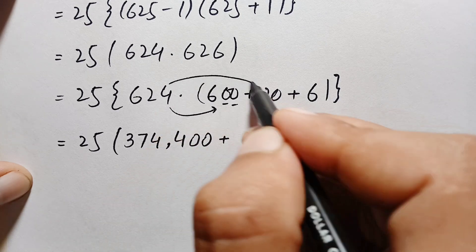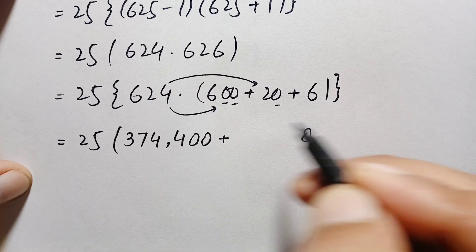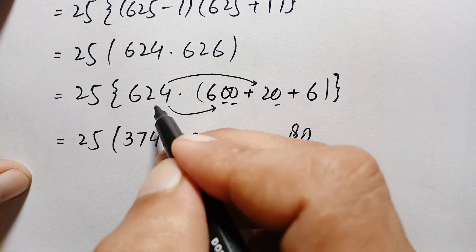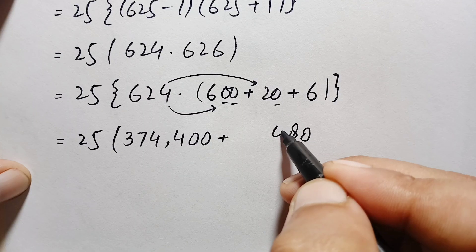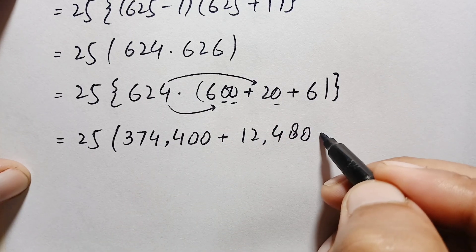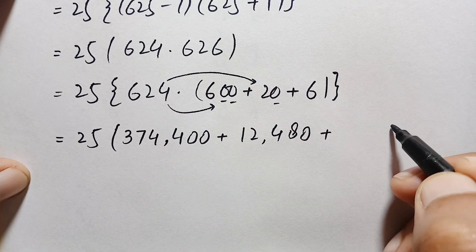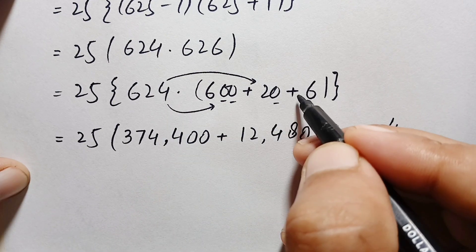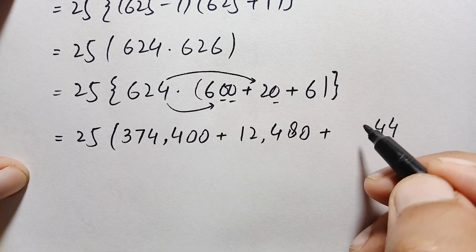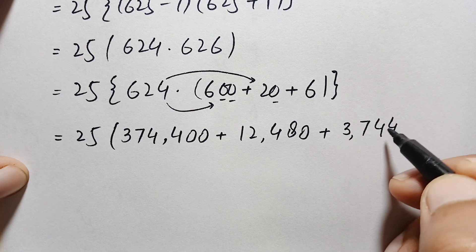Now multiply 624 by 20: 624 times 0 is 0; 2 times 4 is 8; 2 times 2 is 4; 2 times 6 is 12. So 624 times 20 gives 12,480. Then multiply 624 by 6: 6 times 4 is 24 — carry 2; 6 times 2 is 12, plus 2 is 14 — carry 1; 6 times 6 is 36, plus 1 is 37. So 624 times 6 gives 3,744.